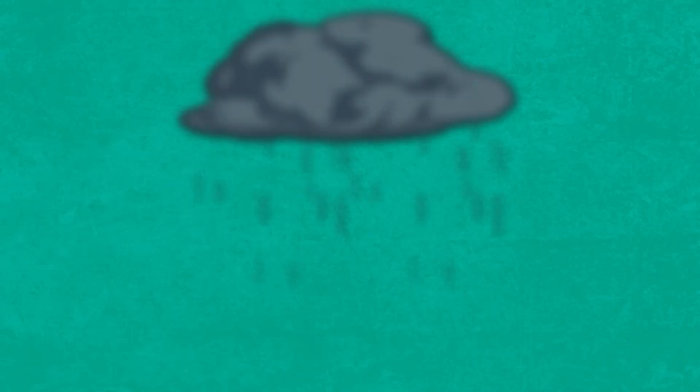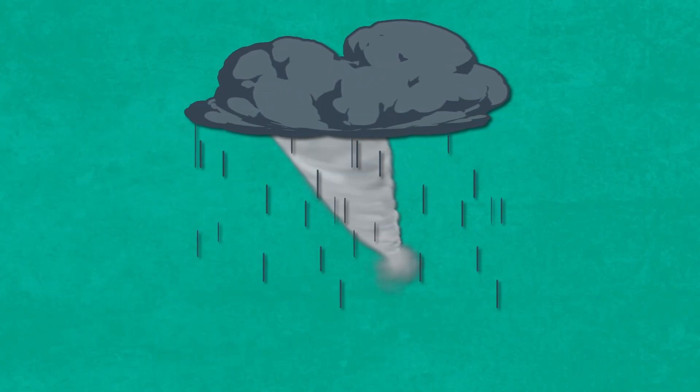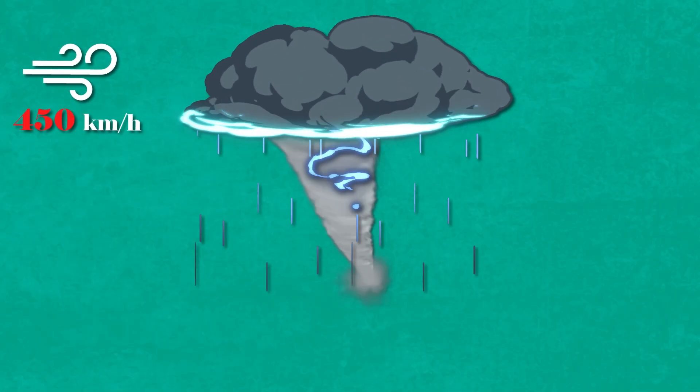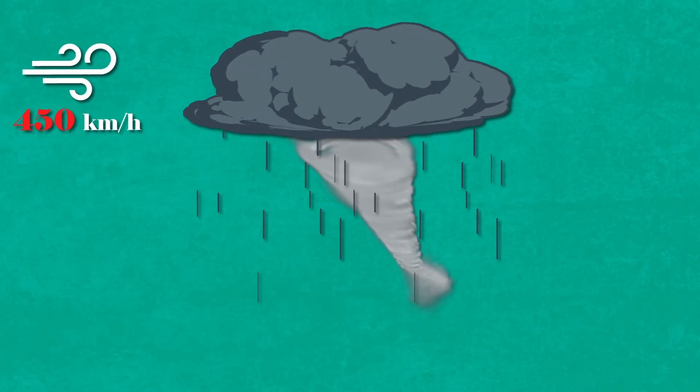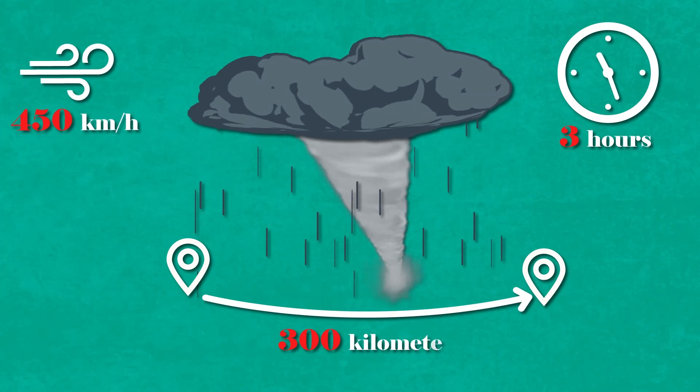They're caused by huge thunderstorms and are basically funnel-shaped vertical columns of spinning air. The high-intensity tornadoes have recorded wind speeds of over 450 kilometers an hour with diameters of up to 4 kilometers. These are truly terrifying wind funnels, and they can last as long as three hours, traveling distances of up to 300 kilometers.